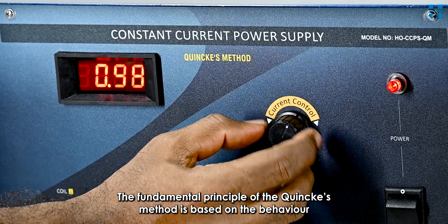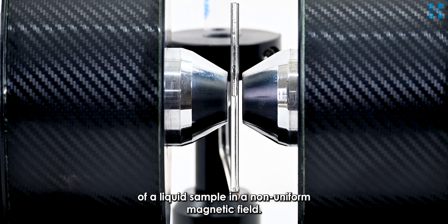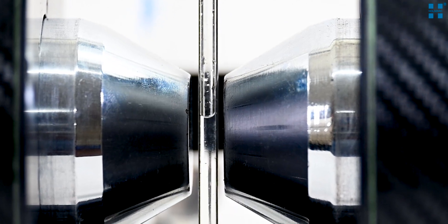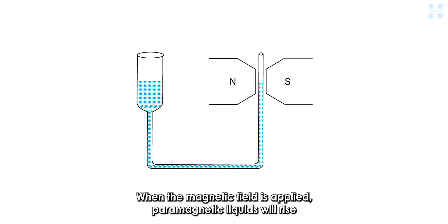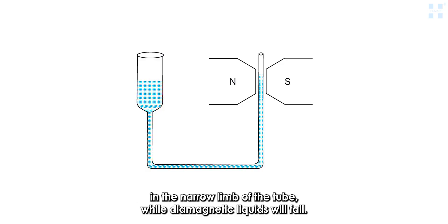The fundamental principle of the Quinkies method is based on the behavior of a liquid sample in a non-uniform magnetic field. When the magnetic field is applied, paramagnetic liquids will rise in the narrow limb of the tube, while diamagnetic liquids will fall.